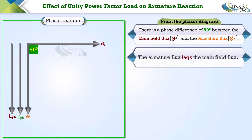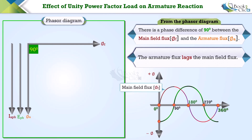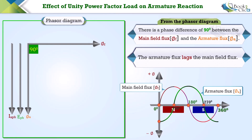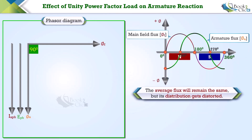Also, the armature flux lags the main field flux. Let us plot these fluxes in the XY plane. The main field flux will cross the x-axis at 0°, 180°, and 360°, while the armature flux will cross the x-axis at 90° and 270°. These are the two poles of the alternator. In the left half of the poles, both armature and field fluxes are in the same direction, but on the right half they are opposite.